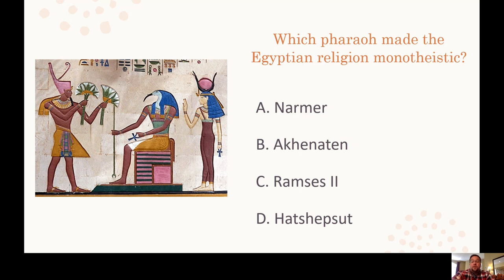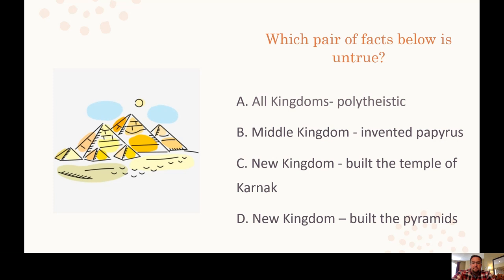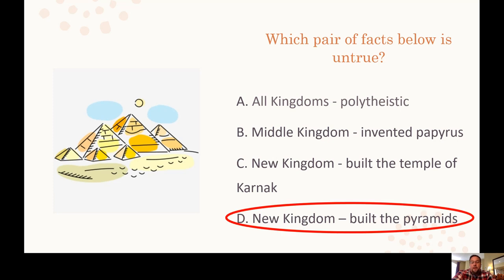Which pharaoh made Egyptian religion monotheistic? That was Akhenaten. Which pharaoh brought Egypt to the height of its power? Ramses II. Which pair of facts below is untrue? All the kingdoms were polytheistic; the Middle Kingdom invented papyrus; the New Kingdom built the Temple of Karnak; and the New Kingdom built the pyramids. The untrue one is that the New Kingdom built the pyramids — it was the Old Kingdom that built the pyramids, going back to the earliest parts of Egyptian history.